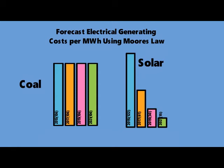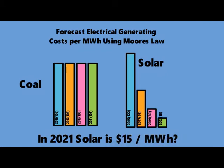So if it dropped by 50% every two years — wow, look what happens — in 2021 it's $15 a megawatt hour. Well, it won't be that low, but that shows you the driving forces.